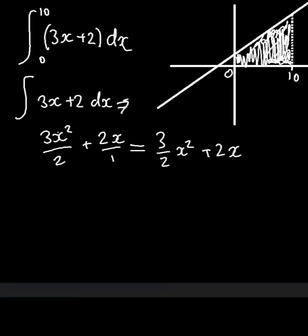This will give us 3x squared divided by 2, and for the constant 2, we will just multiply it by x to get 2x divided by 1, which is just 2x. In the second step, we apply the limits we have been given.